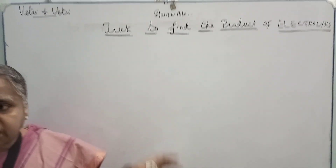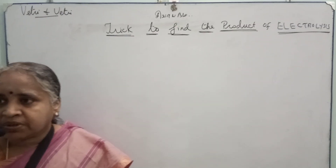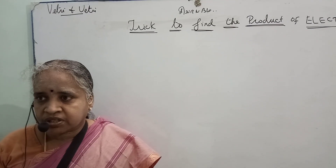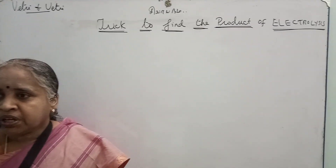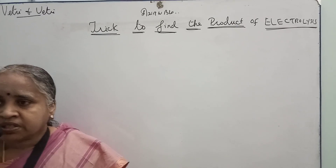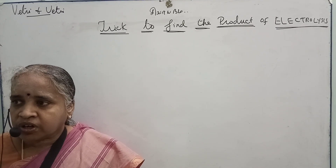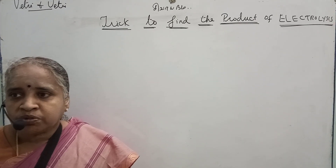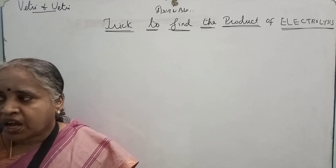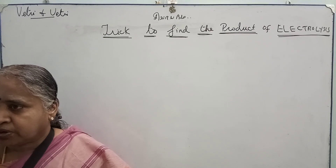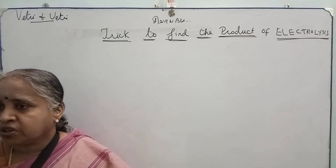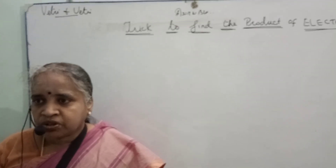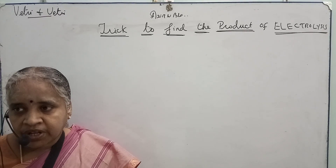So before going to the trick, first I am telling you what is the meaning of electrolysis. The meaning of electrolysis is: in the electrolyte, you pass the current — cation moves to cathode, anion moves to anode, then they are going to deposit or be displaced. So this is the process of electrolysis.